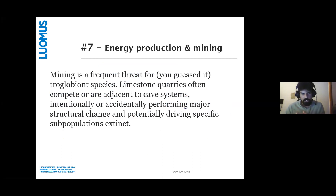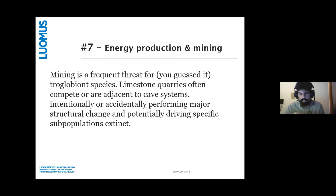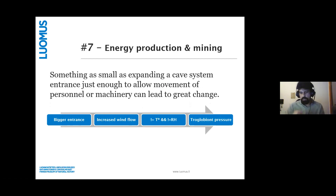Now for the first major regional threat: although mining ranks only seventh globally in terms of relevance, it is much higher up for the Neotropics. As some of you might have guessed from experience, it is a frequent threat for troglobiontic species. Limestone quarries are often adjacent to or in competition with cave systems, and can intentionally or accidentally alter the habitat of troglobiontic species, potentially driving populations and eventually species to extinction. Something as small as a change at the entrance of a cave can increase wind flow, which in turn changes temperature and relative humidity — putting pressure on troglobiontic species that are highly specialized to their stable environment.